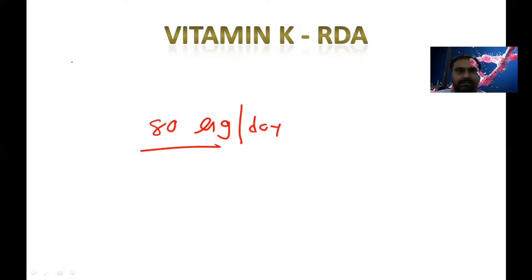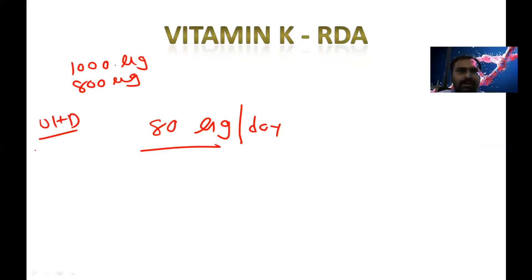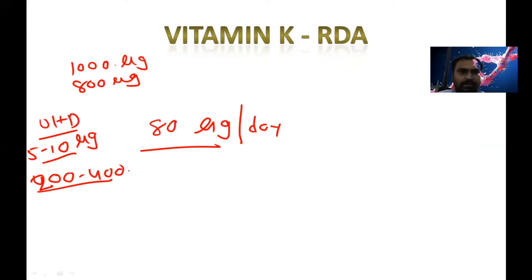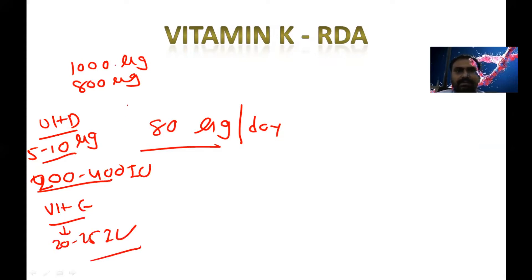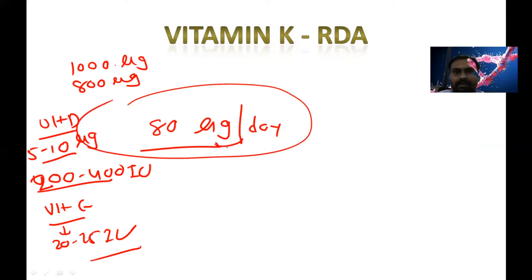For comparison: vitamin A requirement is around 1000 micrograms for males and around 800 micrograms for females. Vitamin D daily requirement is around 5 to 10 micrograms, or 200 to 400 international units. Vitamin E daily allowance is around 20 to 25. And same here, vitamin K is around 80 micrograms.